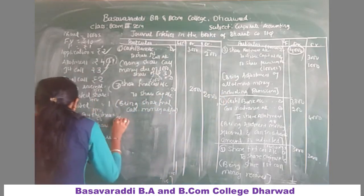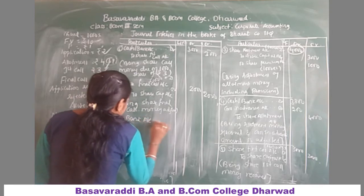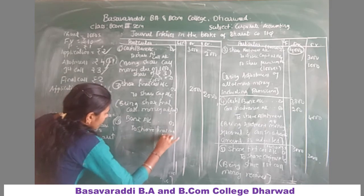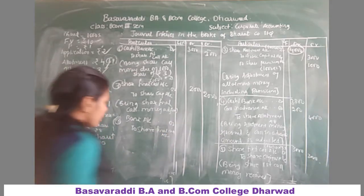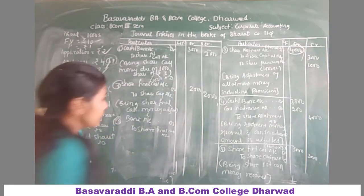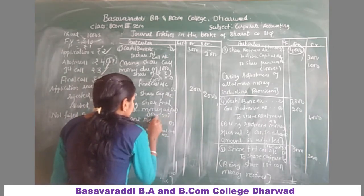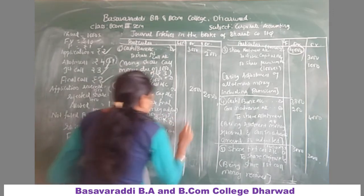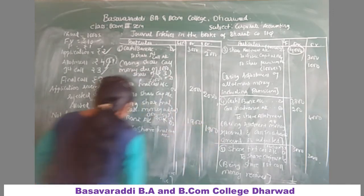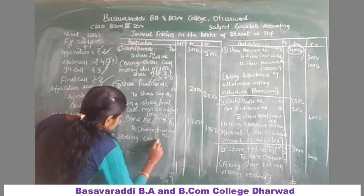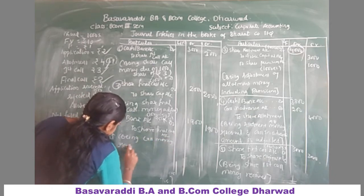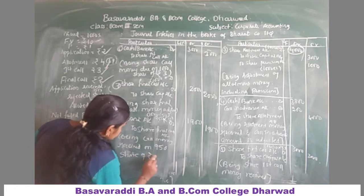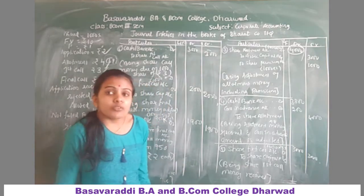The eighth journal entry: Bank Account debit, credit to Share Final Call Account. Shares that paid the final call: 1,000 minus 50 equals 950 shares into rupees 2 equals rupees 1,900. Narration: being call money received on 950 shares at rupees 2 each.